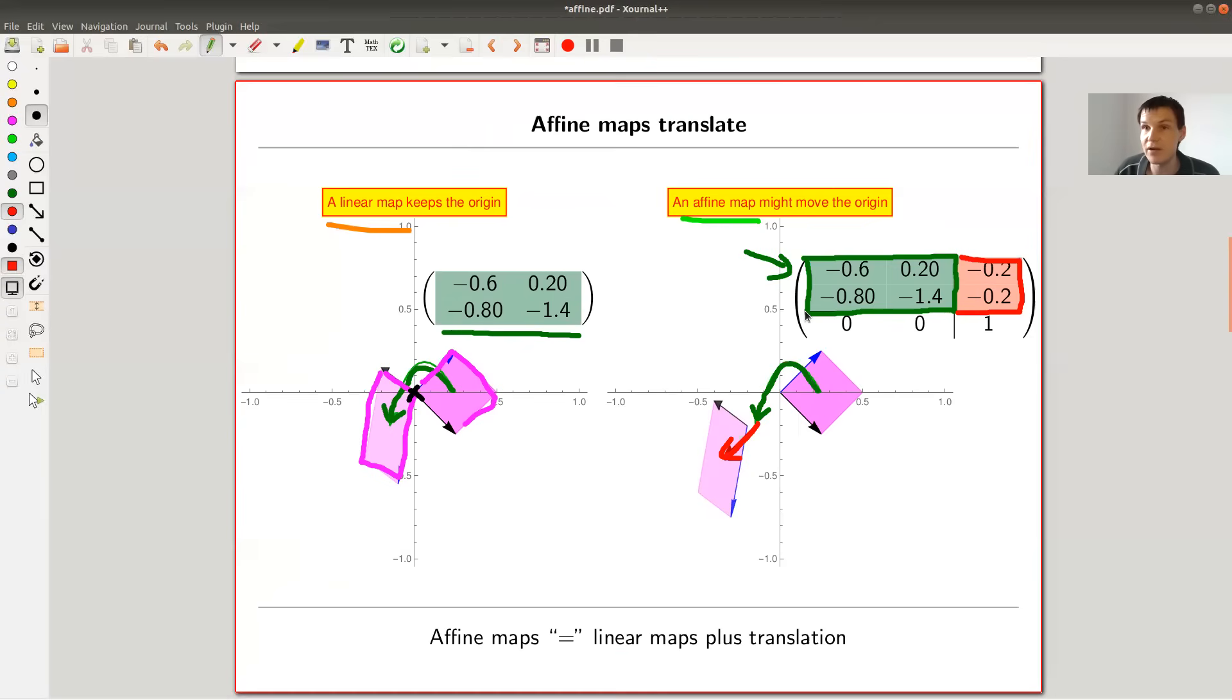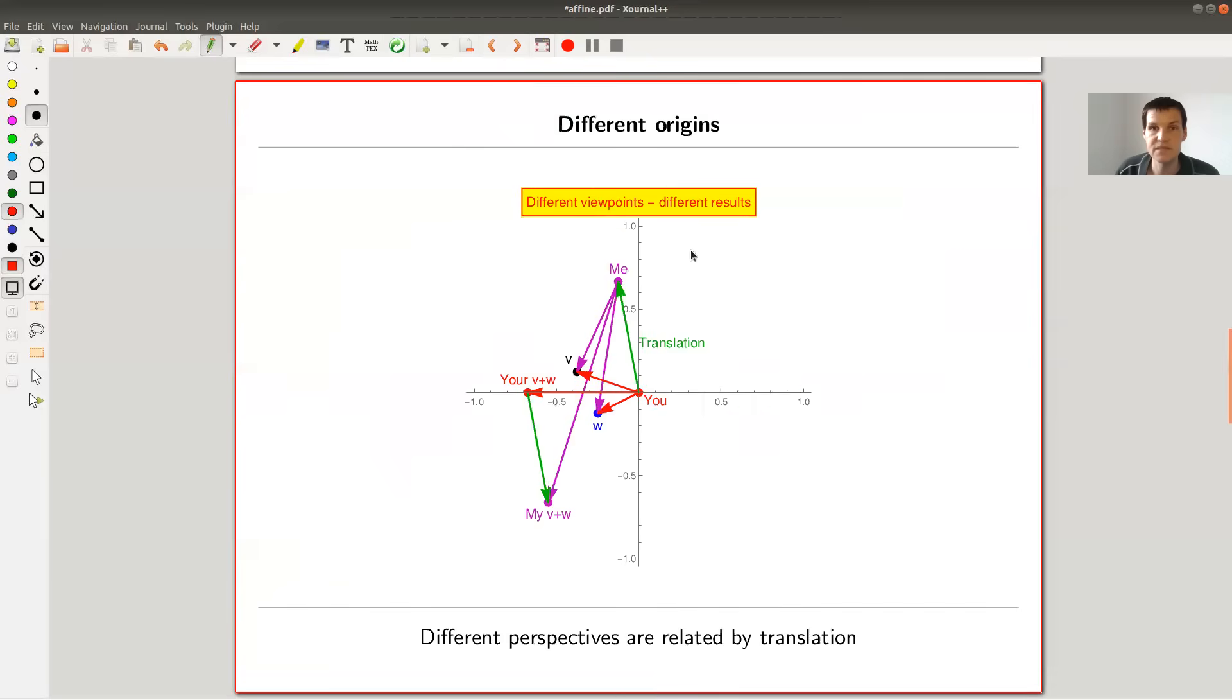But basically, think of affine maps as being linear maps plus translation. And the whole point of this affine, as I just said, is that you can allow different origins, or different viewpoints, or different perspectives, whatever you want. And all of them are related in this setup by translation.